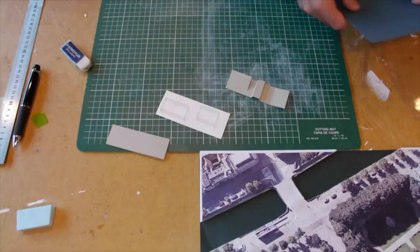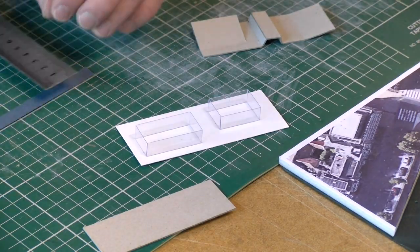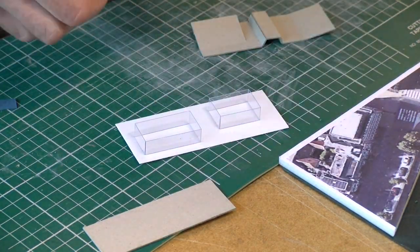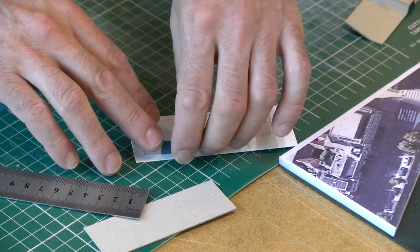And then maybe not everything has to be transparent, so I also add a part of a closed facade with an opening for doors in it.